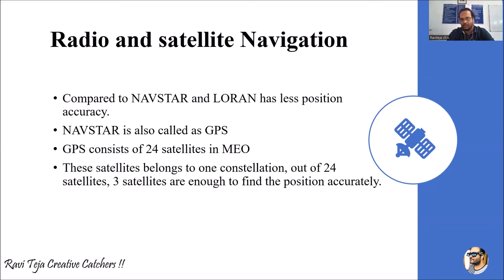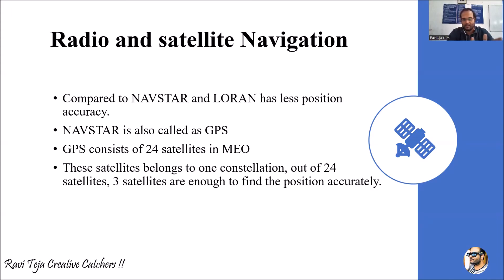NAVSTAR can be directly called GPS — the Global Positioning System — used to find the position of anything globally. We will cover how satellites find position and how inputs and outputs are processed in the next class on position determination. What we know now is that GPS consists of 24 satellites in MEO — Medium Earth Orbit — which sits between LEO and GEO. We have three types of orbits: LEO (Low Earth), MEO (Medium Earth), and GEO (Geostationary), with MEO lying in the middle.